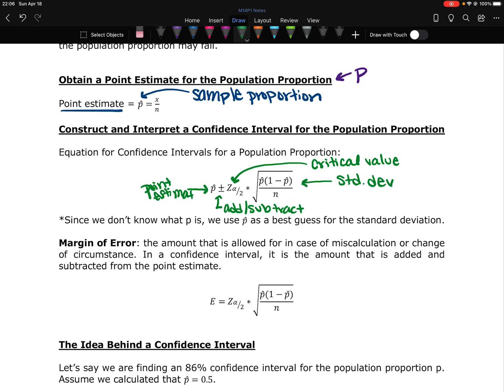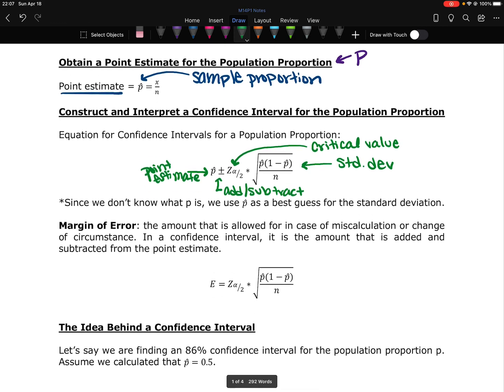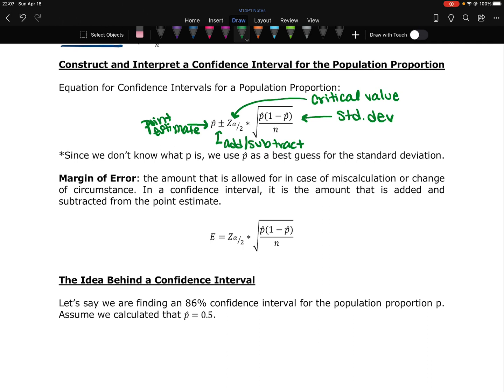So this equation is going to give us an interval, a range of potential values that p, the population proportion, could fall between. So a piece of this formula is called the margin of error. The margin of error is an amount that is allowed for in case of a miscalculation or a change of circumstance. This is the amount that is added and subtracted from the point estimate. So the whole second half of the equation, that z score or critical value times the standard deviation, is called the margin of error. And it is shorthanded typically by a capital E.